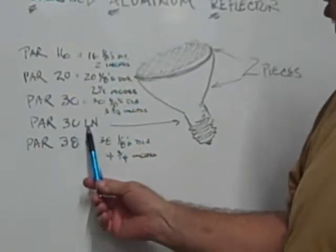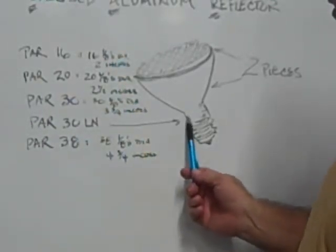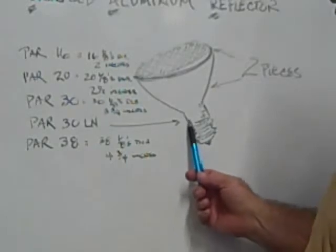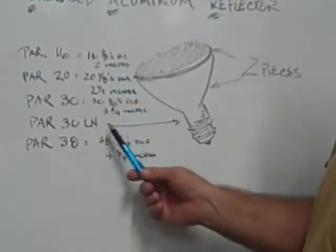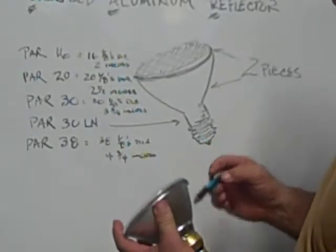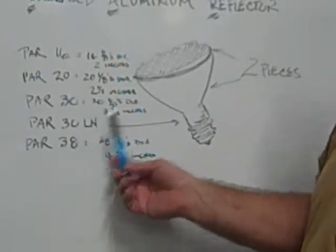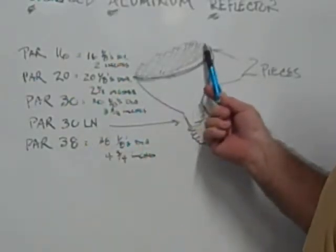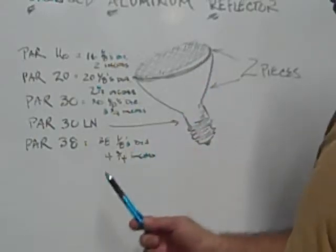Now there is a PAR 30 long neck. That's referring to the length of the neck of the bulb. So if it's longer, there is also a shorter neck bulb. But the 30 is three and three quarter inches across the diameter of the face of the bulb.